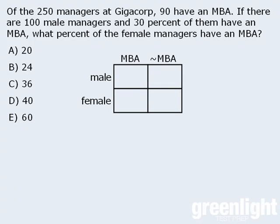Our goal is to place each of the 250 managers in one of the four boxes depending on their characteristics. First, we are told that 90 of the managers have an MBA, so the sum of those two boxes must be 90. Since there are 250 managers altogether and 90 have an MBA, the remaining 160 do not, so the sum of those two boxes must be 160.